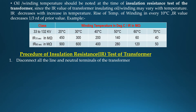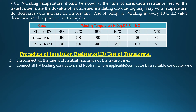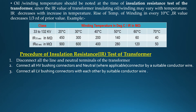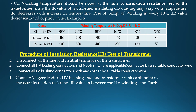Procedure of Insulation Resistance Test of Transformers. Step 1: Disconnect all line and neutral terminals of the transformer. Connect all HV bushing connectors and neutral connector by suitable conductor wire. Connect all LV bushing connectors with each other by suitable conductor wire. Connect megger leads to HV bushing connector wire and to the HV bushing stud and transformer tank earth point to measure insulation resistance IR value between the HV winding and earth.